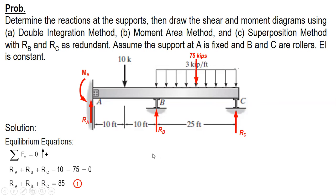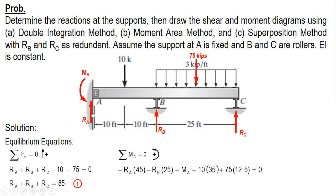The next equation is summation of moments about C. Using counterclockwise as positive: RA is clockwise (negative), RB is clockwise (negative), MA is counterclockwise (positive), and the loads 10 and 75 are also positive. We have: negative RA times 45, minus RB times 25, plus MA, plus 10 times distance 35, plus 75 times 12.5 (half of 25). After simplifying and rearranging, this is equation number two.